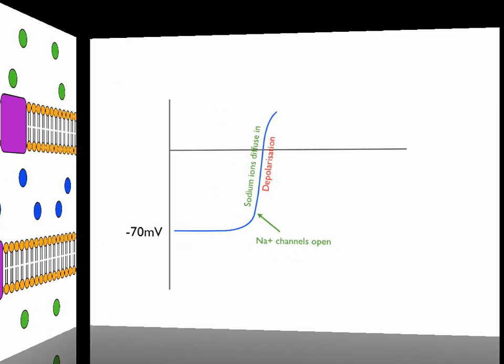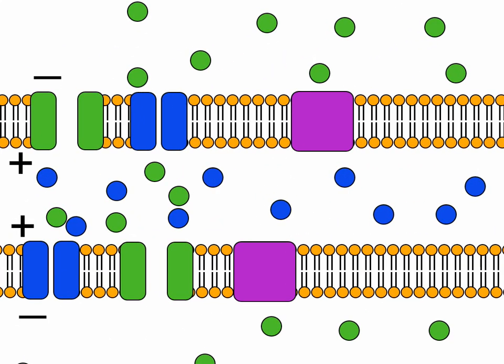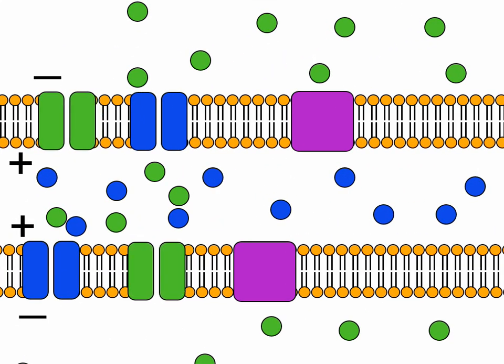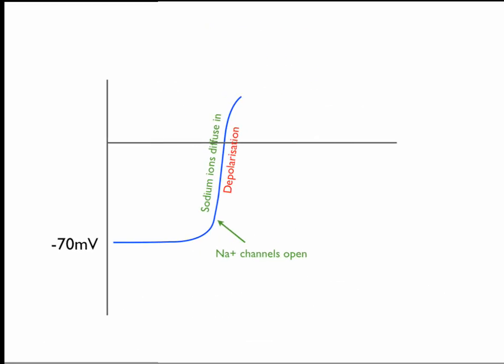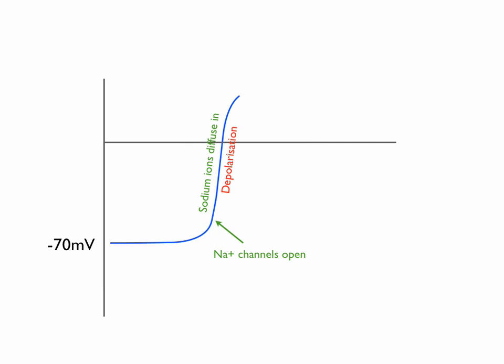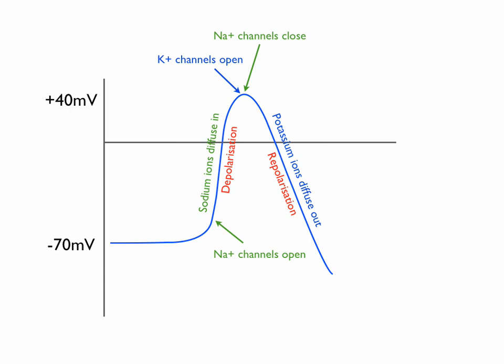Looking back at our neuron, the sodium channels now close, and potassium channels will allow potassium ions to diffuse out of the cell. This swaps the polarity of the membrane again so that the inside is now more negative than the outside. And we can see on the graph that depolarization generally reaches around plus 40 millivolts before these potassium channels open. As potassium ions diffuse out, this causes repolarization of the membrane as the inside becomes more negative again.